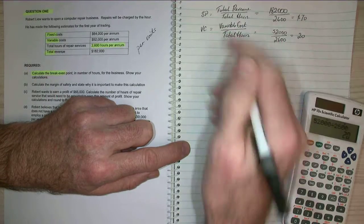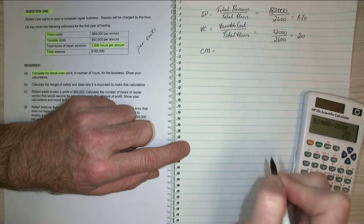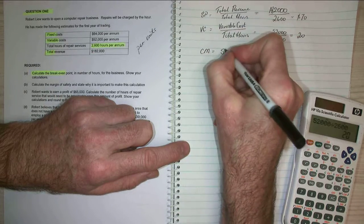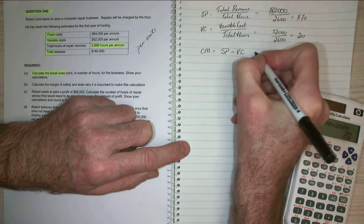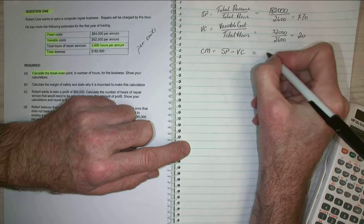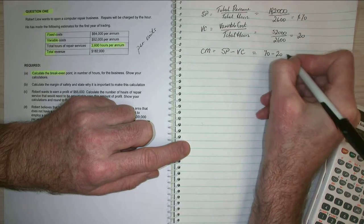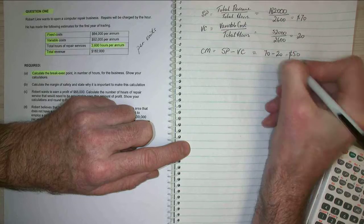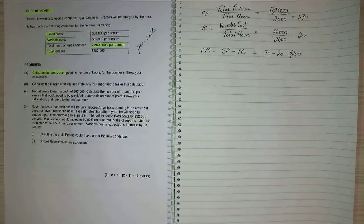So my contribution margin, which is what we're trying to obtain, is my selling price minus my variable costs equals $70 minus $20.50. So my contribution margin equals $50.